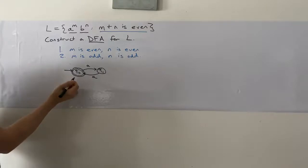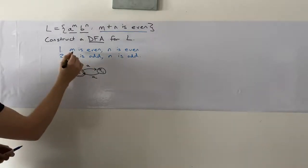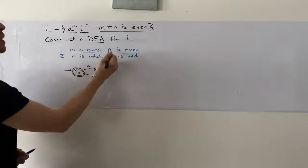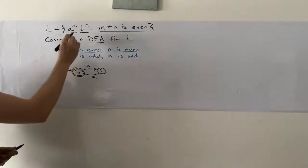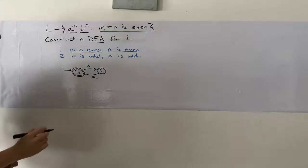So consider the case of where we have an even number of A's, which means we end up back at Q0. So what do we do? Well, we're in this camp right now, which means we got to accept the strings exactly when we have an even number of B's.